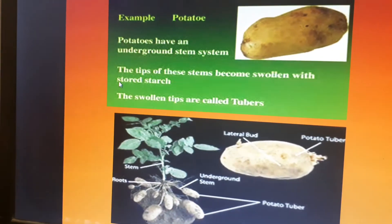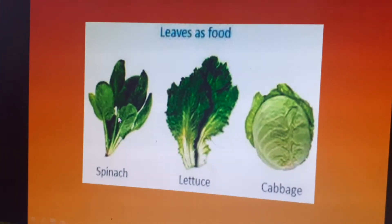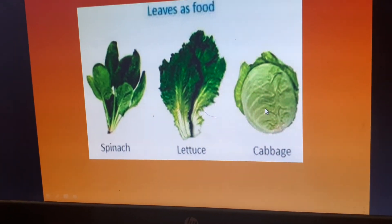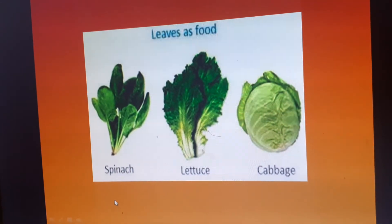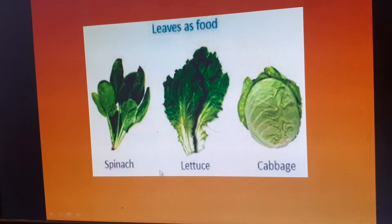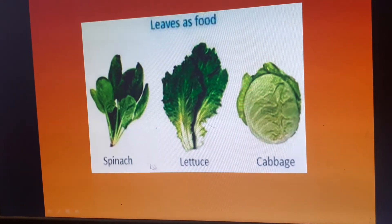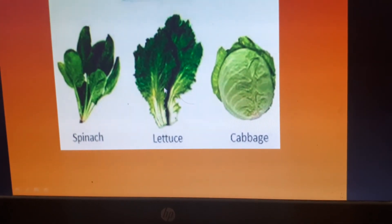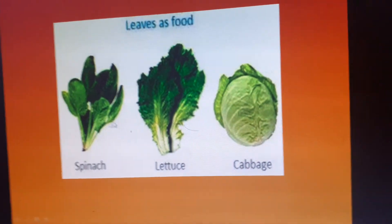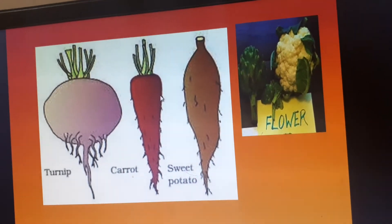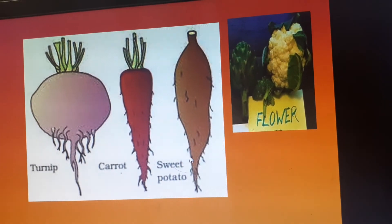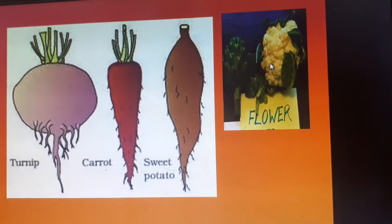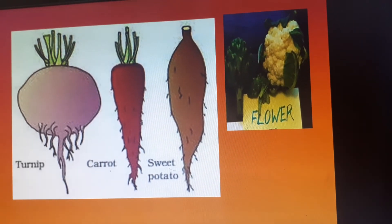Next, these are the leaves — parts which we use as food — like spinach, lettuce, and cabbage. In previous classes, you have learnt about a disease called anaemia, and to overcome this disease, doctors advise you to eat green leafy vegetables. These are the main leaf parts of plants which we use as food. Next, these are root parts we use as food, like turnip, carrot, and sweet potato. There is also the flower part — cauliflower — which is also a part of a plant we use as food.